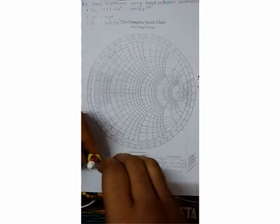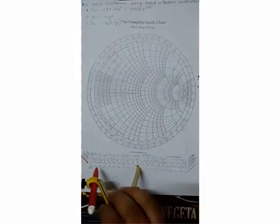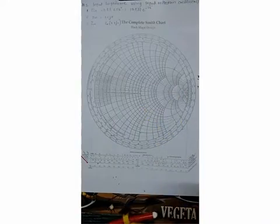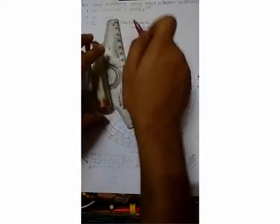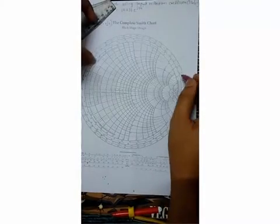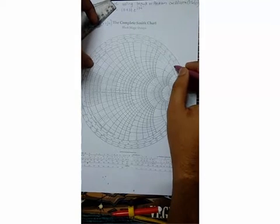After that, we have to find the 34-degree angle. Start here: 0, 10, 20, 30, and then 34 degrees. Just extend it.